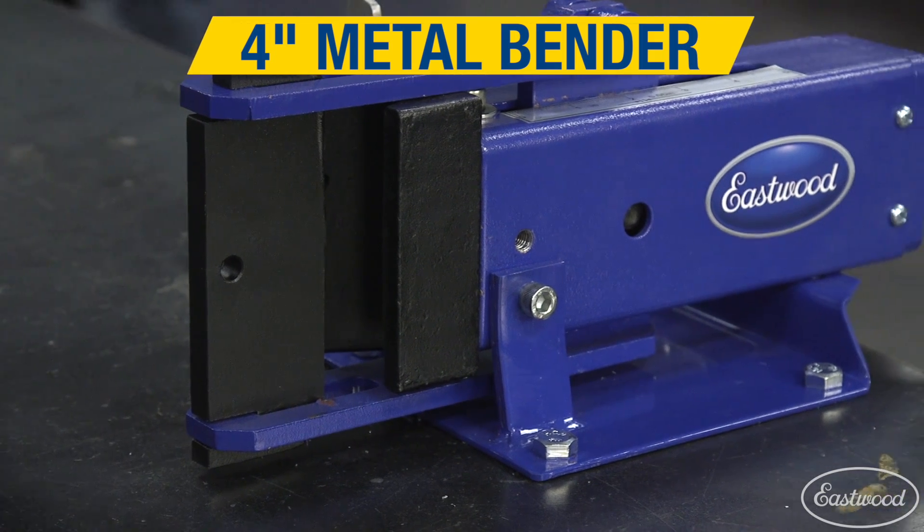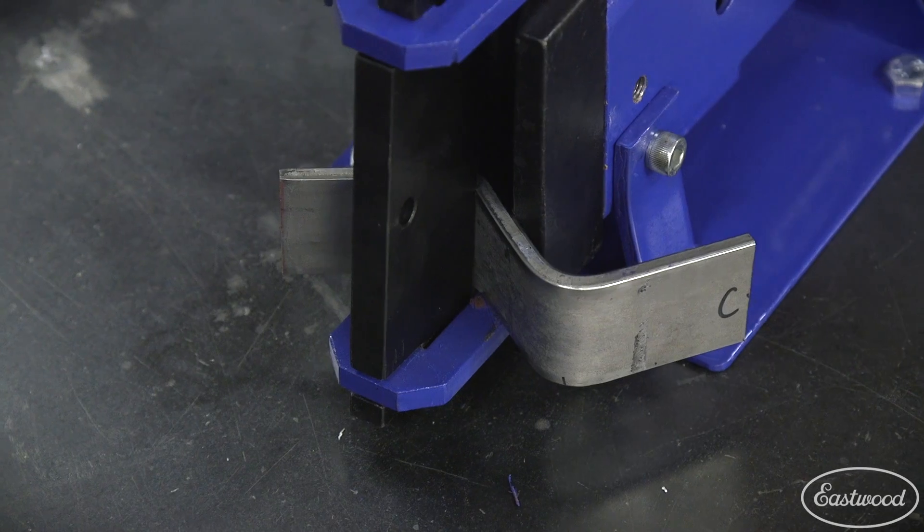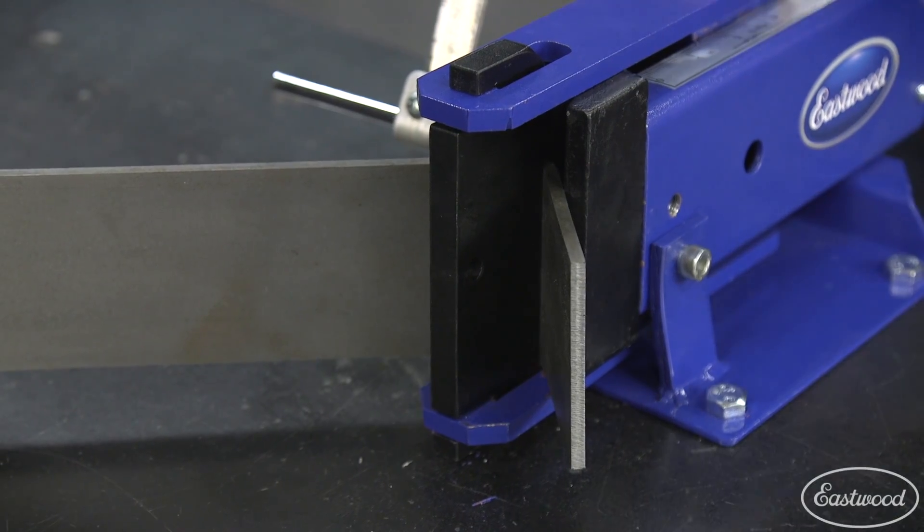The Eastwood 4-inch metal bender is a great way to easily make precise bends in metal up to 3/8 inch thick or 4 inches wide.